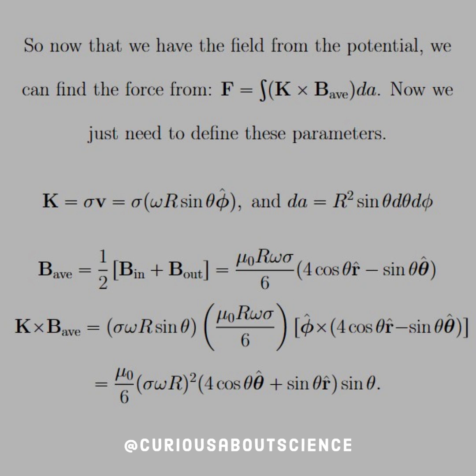K is equal to σv, which we know v is just the linear velocity, so now we need the angular velocity. That's why we have ωR sin θ ϕ̂ direction, and dA for this. Since it's cylindrical and the radius isn't changing, we're a shell. It's just the angular integrals, so R² sin θ.